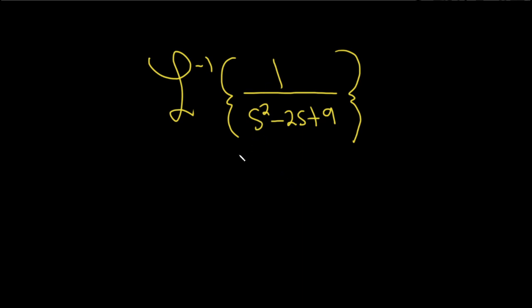In this problem, we have to find the inverse Laplace transform of this function. I don't see a nice way to factor this - two numbers that multiply to 9 but add to negative 2. It doesn't seem that easy to do.